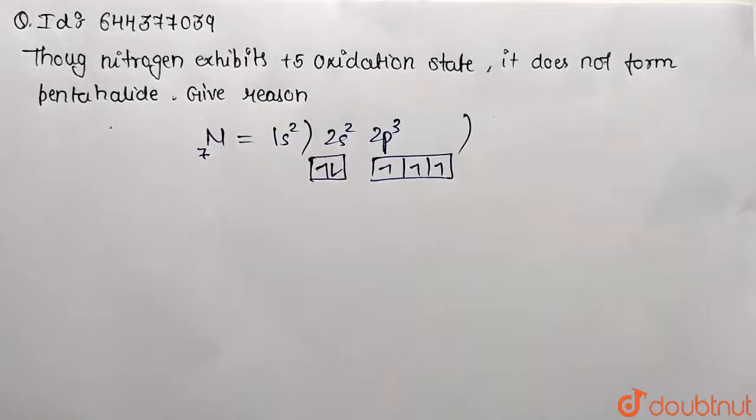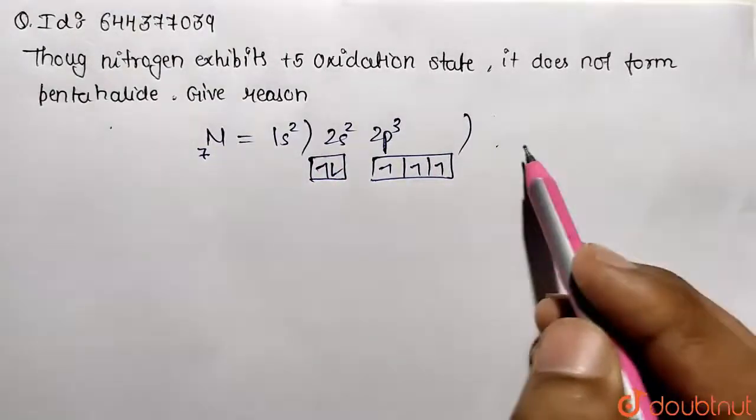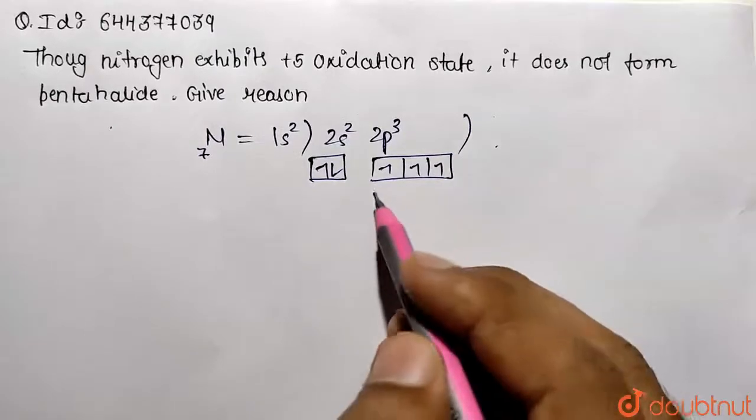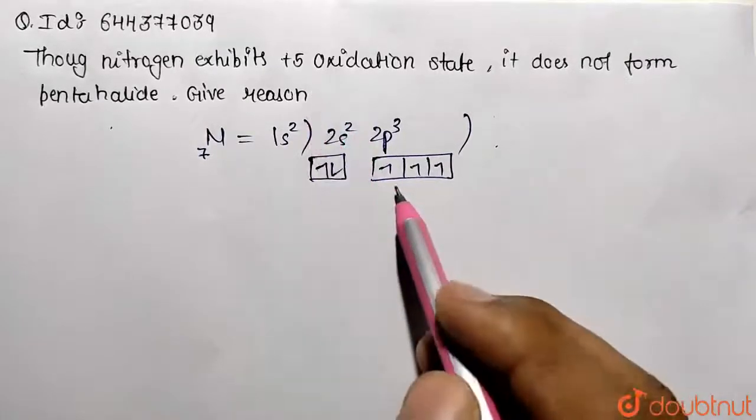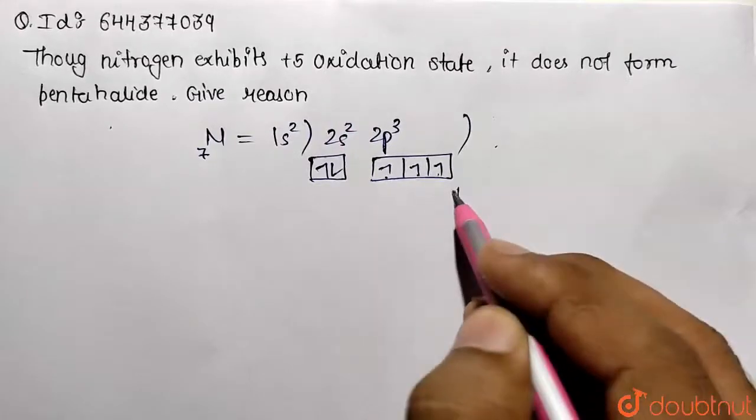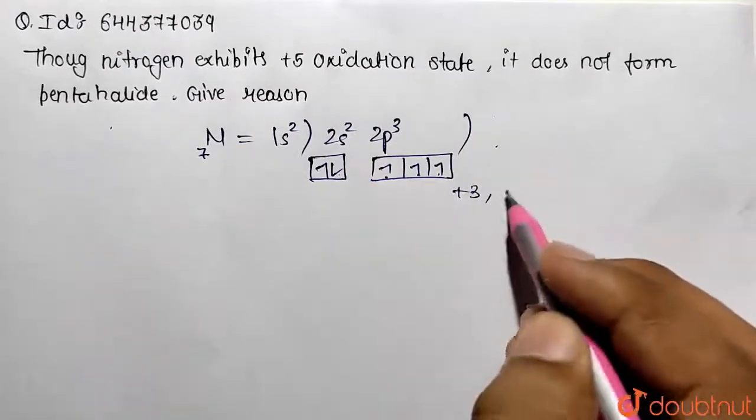filled p-orbital. Nitrogen belongs to the second period, so it does not have any d-orbital. If we see the oxidation state, that means the number of electrons it can lose. It can lose three electrons from p, showing +3 oxidation state, and two more can participate from s, so